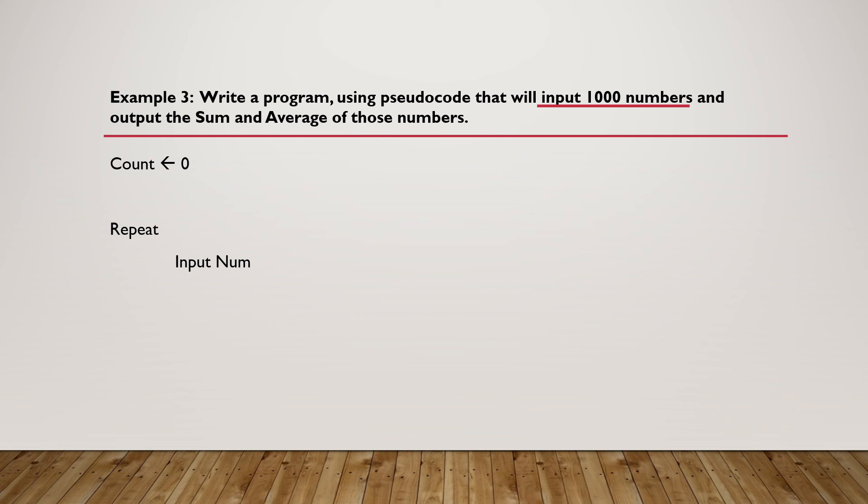We're going to initialize the sum to 0 and have the sum being sum plus number. We're going to increment our count using count plus 1 and set our condition less or equal to 1000 as specified before. The only difference is that our average will be calculated after the loop. So average will be equal to sum divided by 1000. And we're going to output the sum and average at the end of the program.